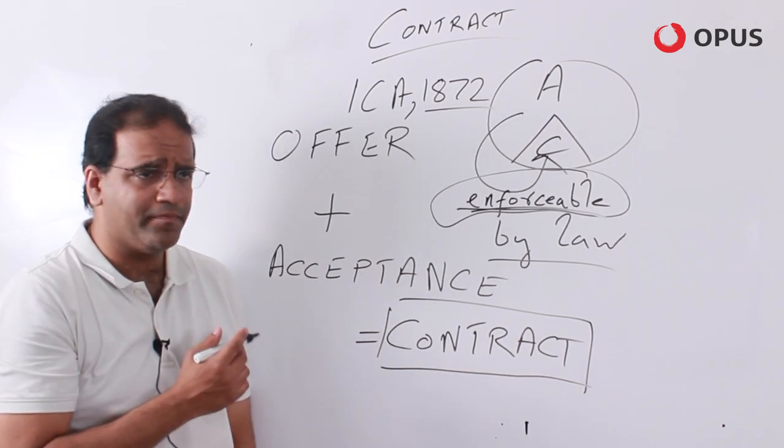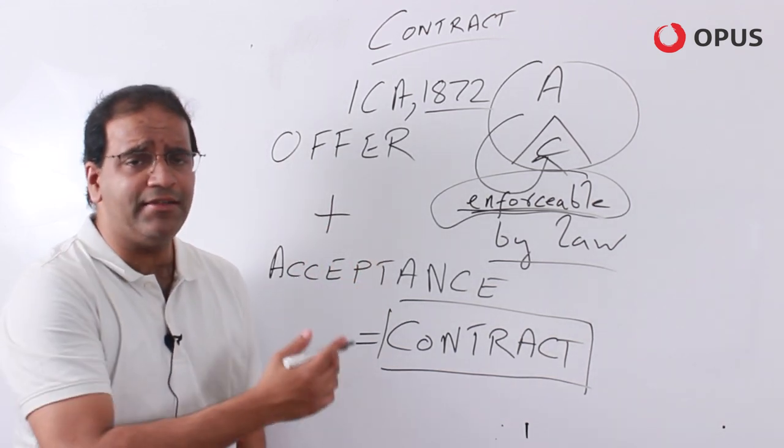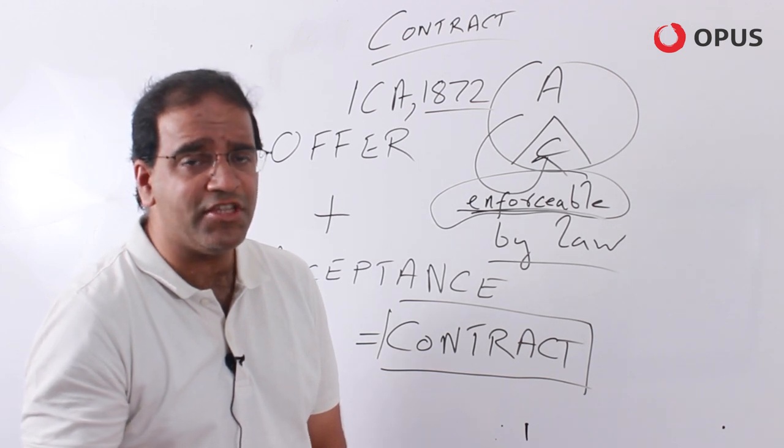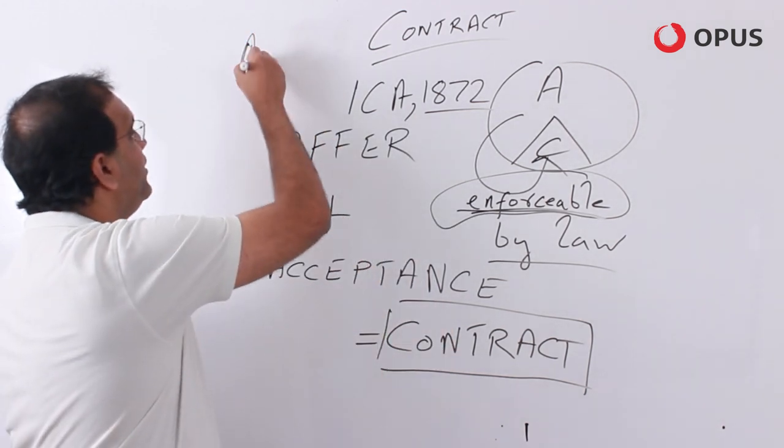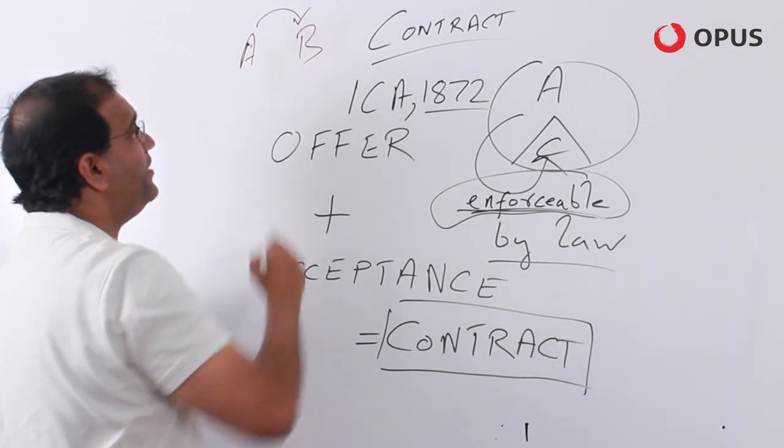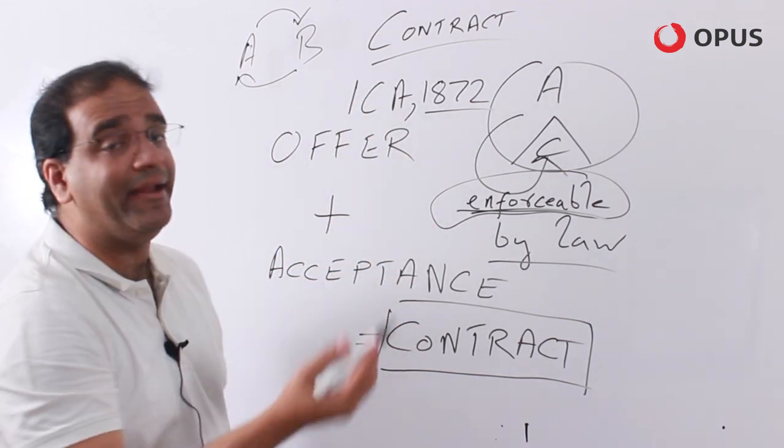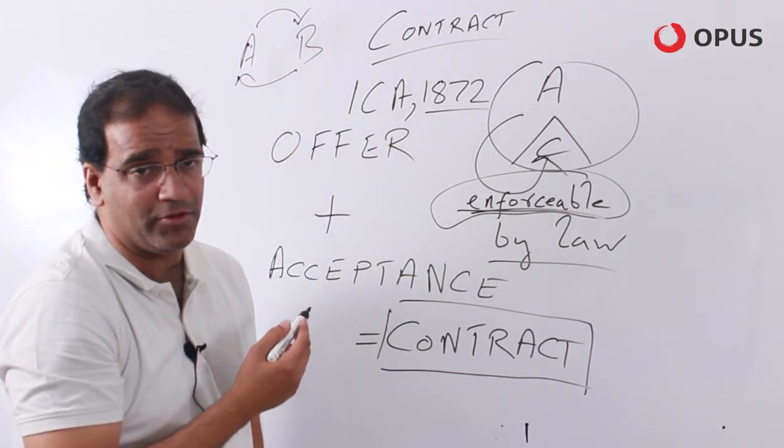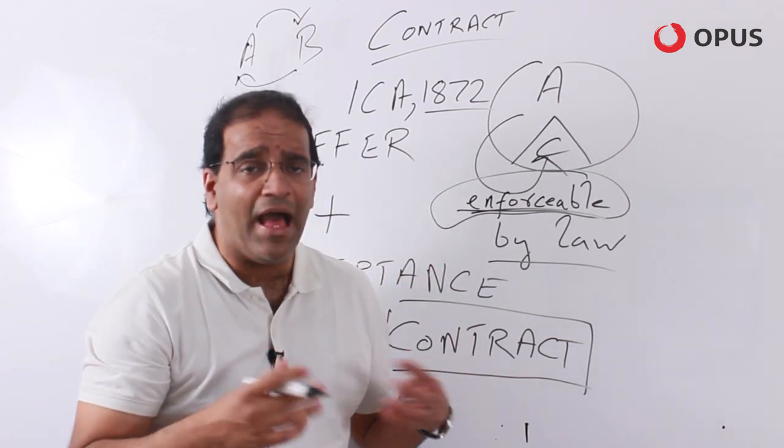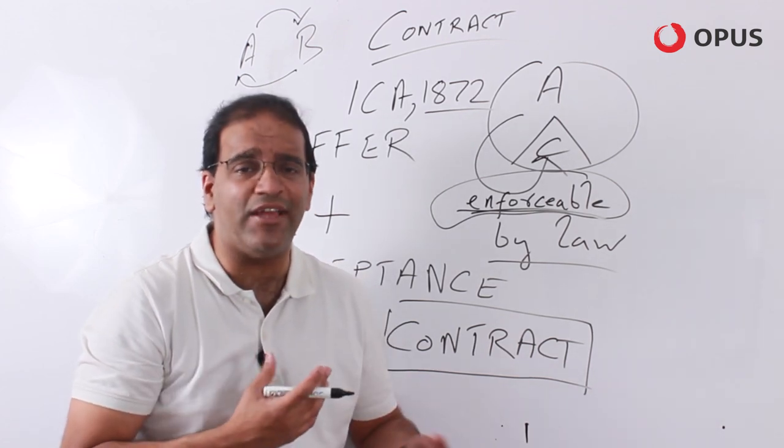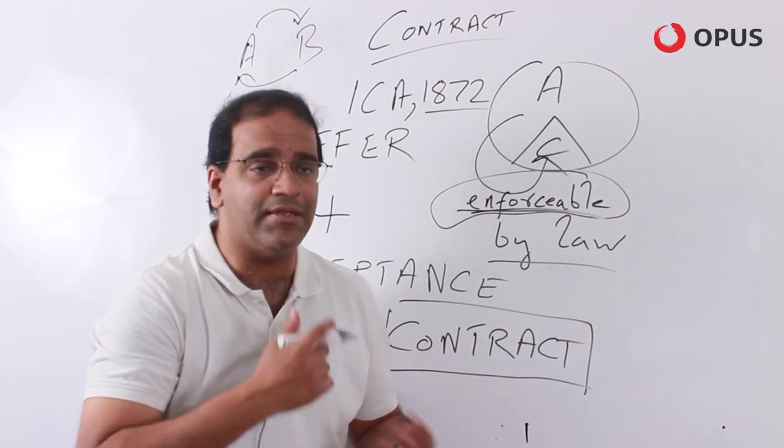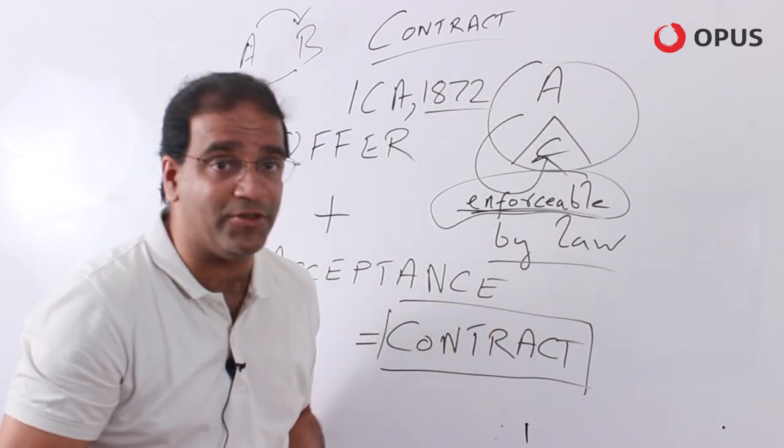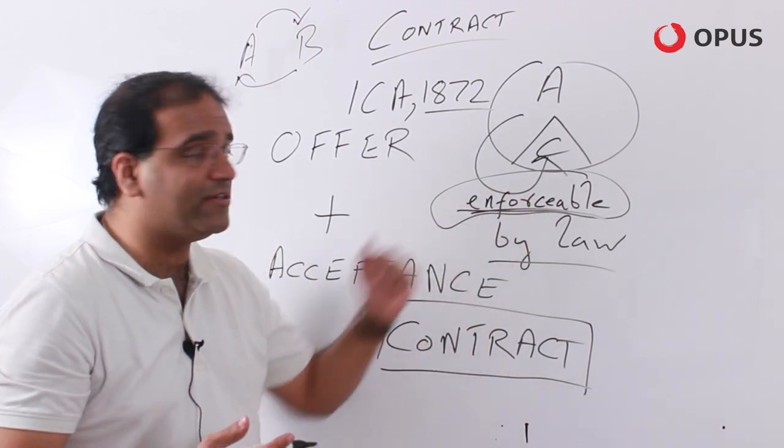So offer plus acceptance equals a contract. Keep in mind that this offer plus acceptance must be known to both the parties in order for it to be a valid offer or a valid acceptance as the case might be. Once there is a valid contract, thus we see that an offer followed by an acceptance ultimately culminates in the conclusion of a contract, which basically means now there are legally binding obligations on the two parties to a contract. So let's say A and B entered into a contract. A made an offer to B and B accepted this offer. Now there arises legally binding obligations on both of them. A must do what he had said he would do, and likewise B must do what he had promised he would do.